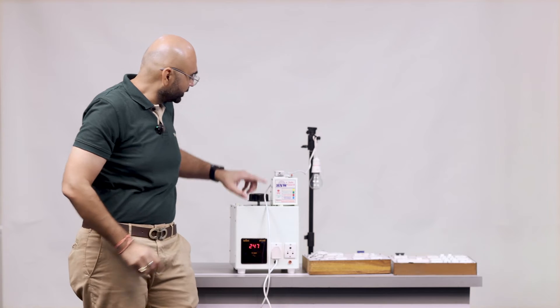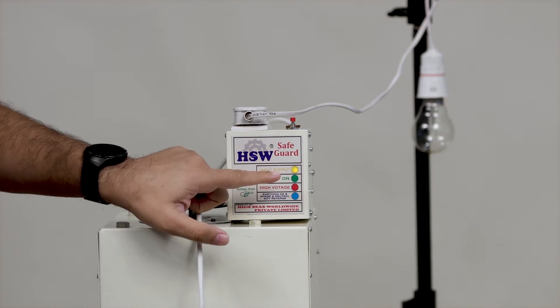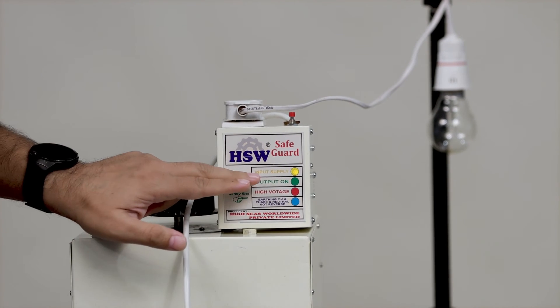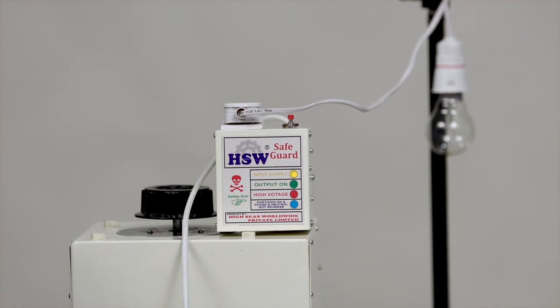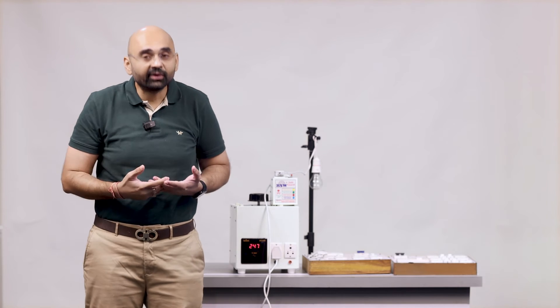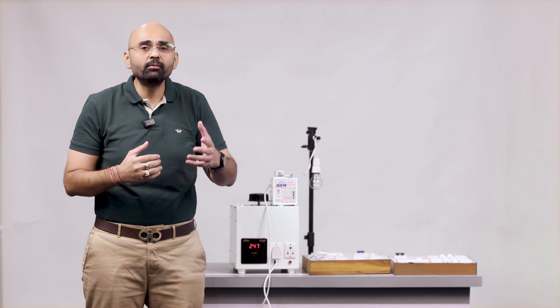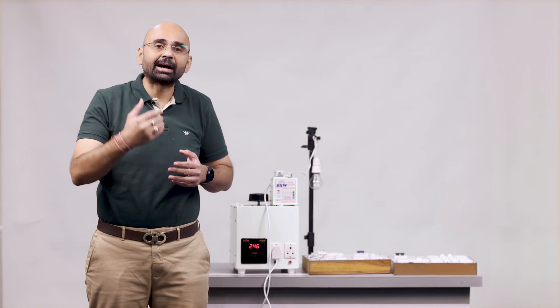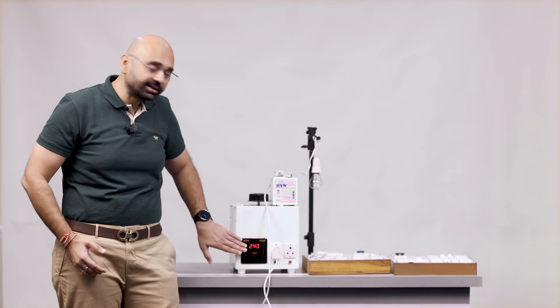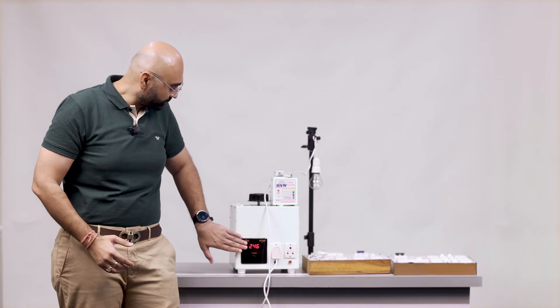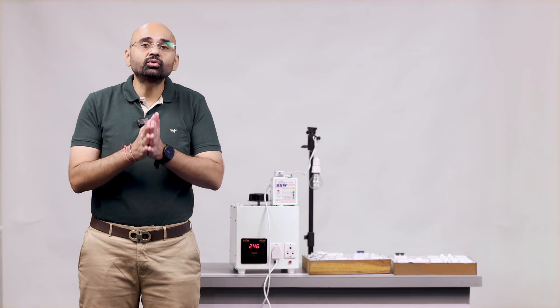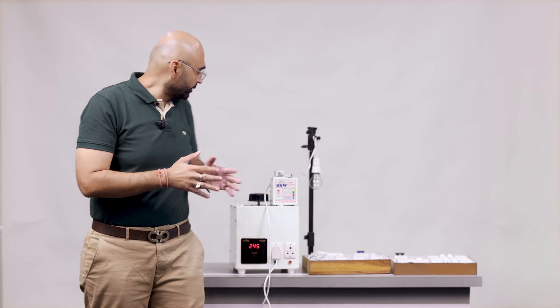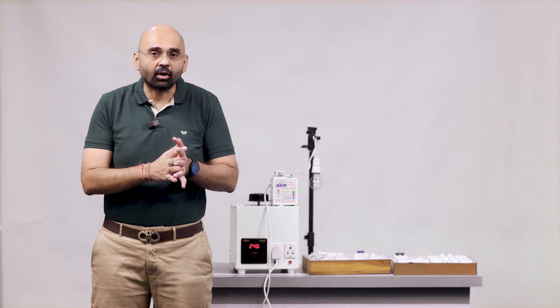So now input supply is on and we will give supply to this electric bulb from the device. So now you can see that input supply is on, output is off because as I said when you give the supply for the first time then it takes two minutes to pass on the power supply and you can see that the wattage supply is around 246. So let's wait for the power supply to get on.